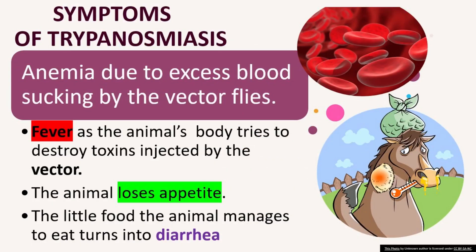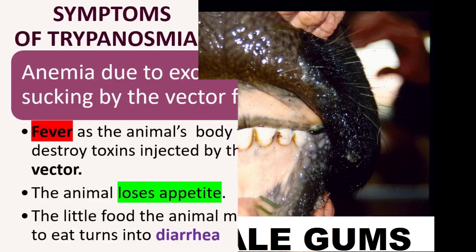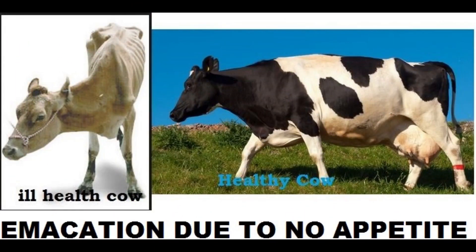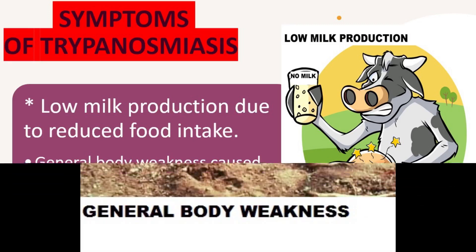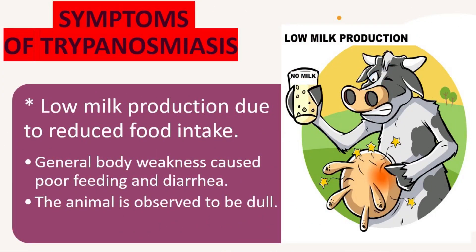Symptoms of trypanosomiasis include anemia due to excess blood sucking by the vector flies, and fever as the animal's body tries to destroy toxins injected by the vector. The animal loses appetite, and the little food it manages to eat turns into diarrhea. There is also low milk production due to reduced food intake, and general body weakness caused by poor feeding and diarrhea. The animal is observed to be dull.